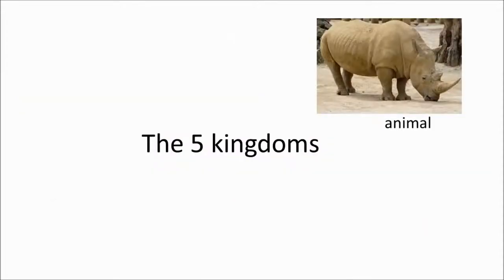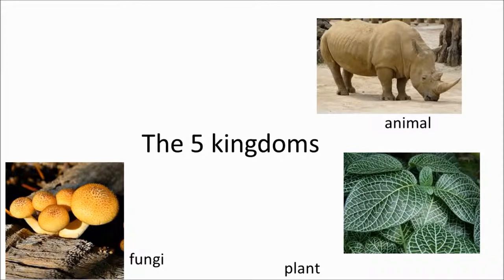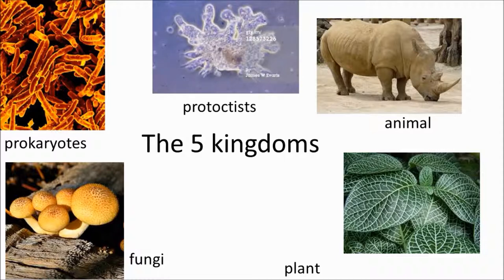Let's start with the highest level of classification — the kingdoms. We have the animals: multicellular organisms that feed off other organisms, and whose cells have no cell walls. Then the plants, whose cells have a cellulose cell wall and use light energy to convert carbon dioxide and water into glucose and oxygen — that's photosynthesis. The fungi have a chitin cell wall — chitin is a protein — and they reproduce using spores. The prokaryotes, like bacteria or blue-green algae, have cells with no distinct nucleus. And then we have the protoctists — things like amoebas — usually single-celled organisms, though they can live as colonial organisms.